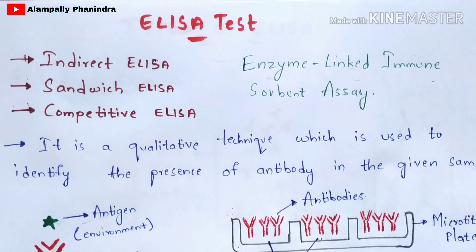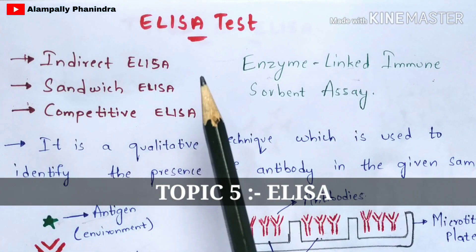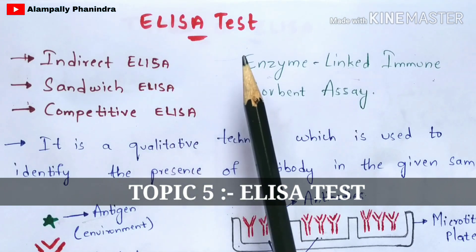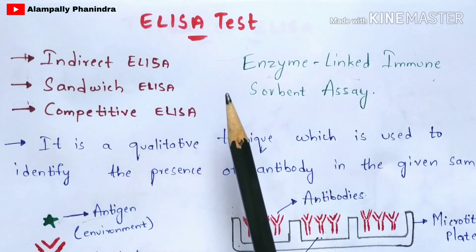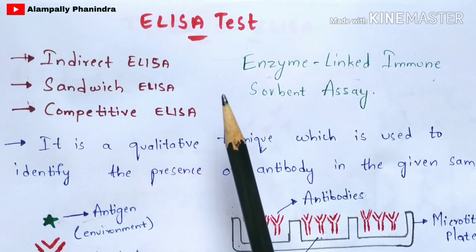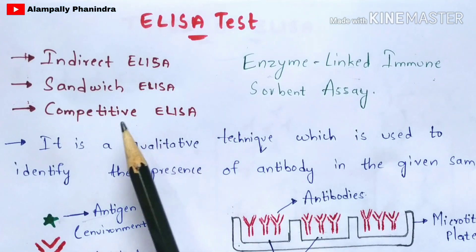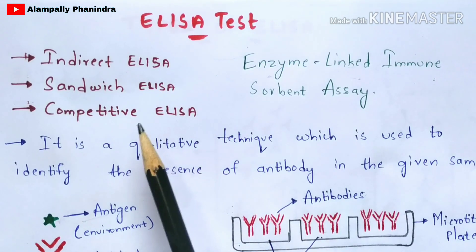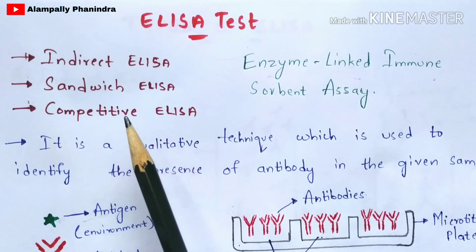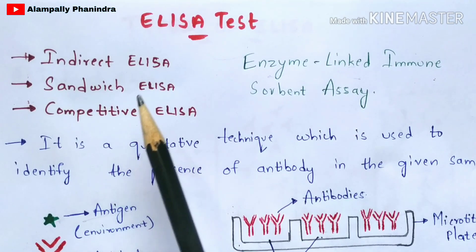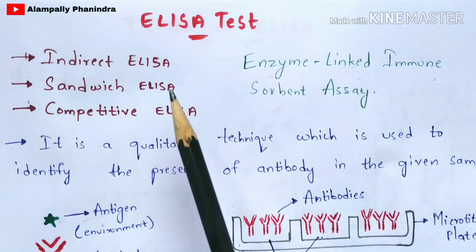In this video, let us discuss the fifth topic of immunotechnology called the ELISA test. I'm going to explain the introduction of the ELISA test and the types of ELISA: indirect, sandwich, and competitive. All of these will be explained in detail, so watch this video till the end.